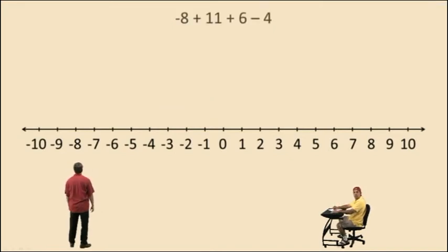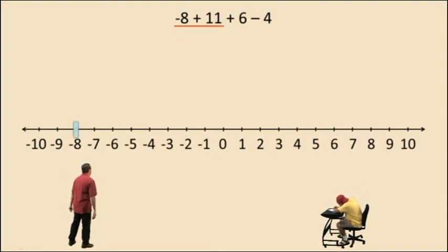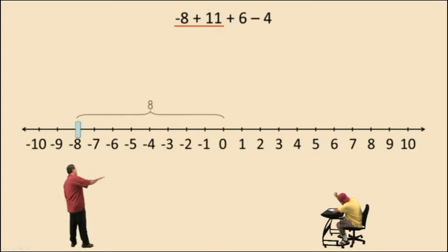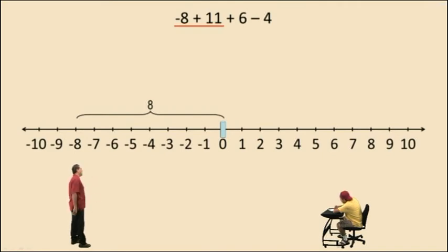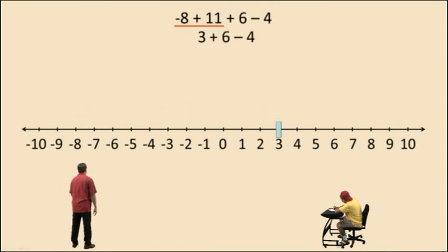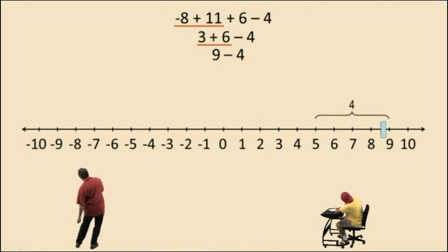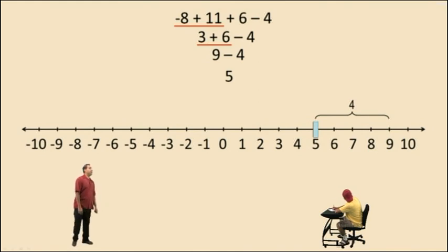Let's try one more: negative 8 plus 11 plus 6 subtract 4. We work left to right. Negative 8 plus 11 — we move 11 units to the right; moving 8 puts us at 0, and 3 more because 8 plus 3 is 11 — so negative 8 plus 11 is positive 3. Now 3 plus 6: we start at 3, move 6 units to the right, that gives us 9. And 9 subtract 4 gives us 5 for our final answer.